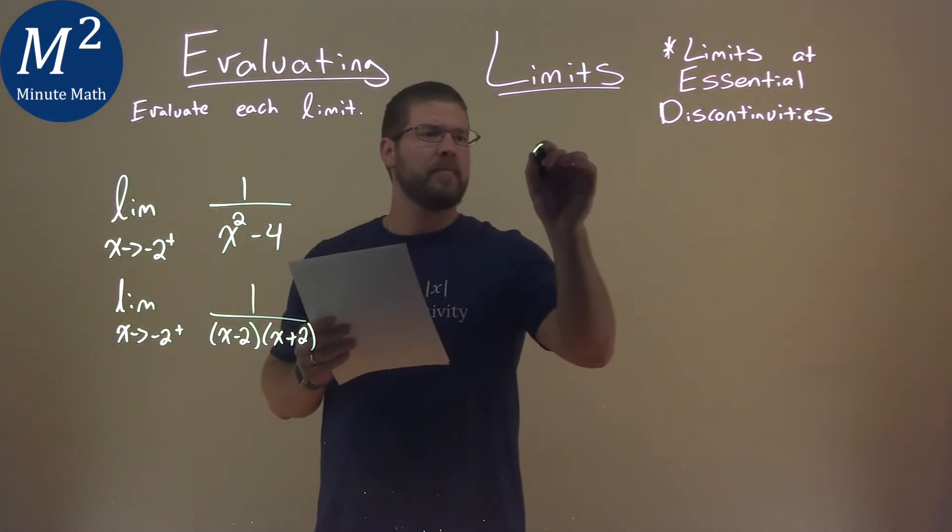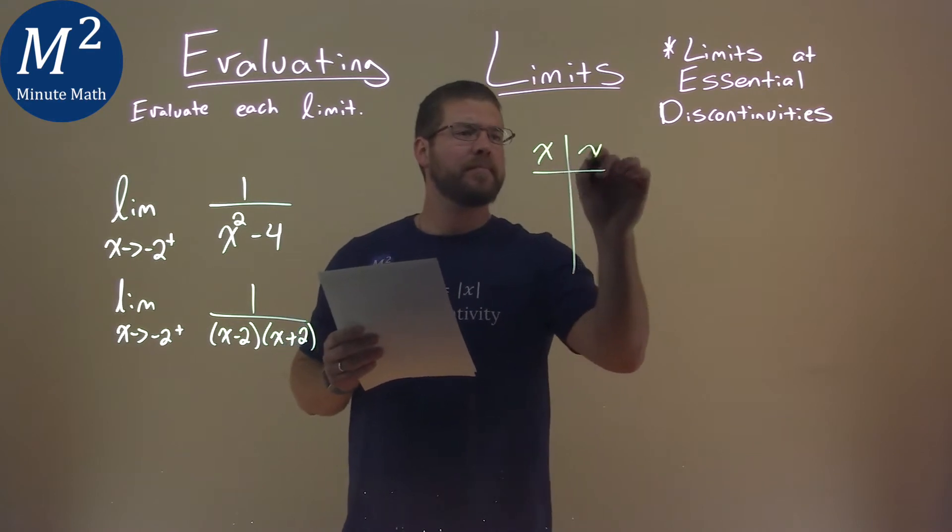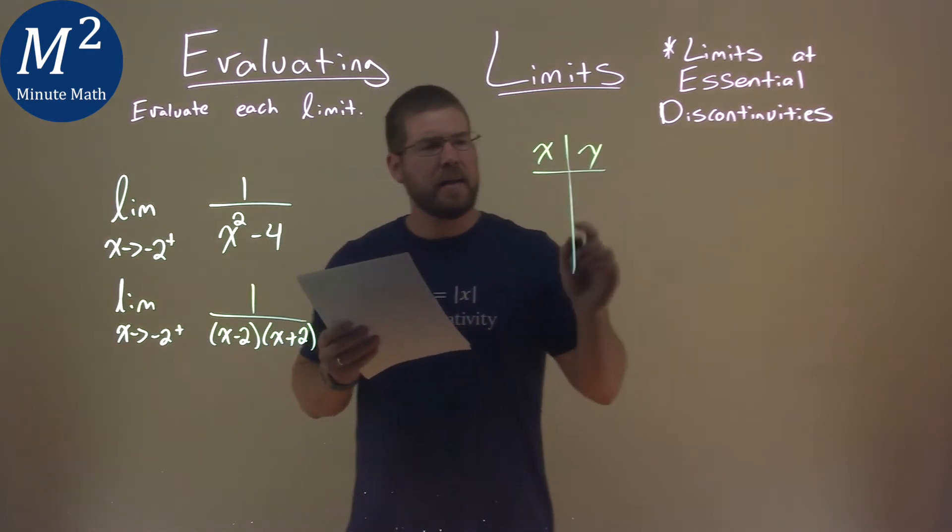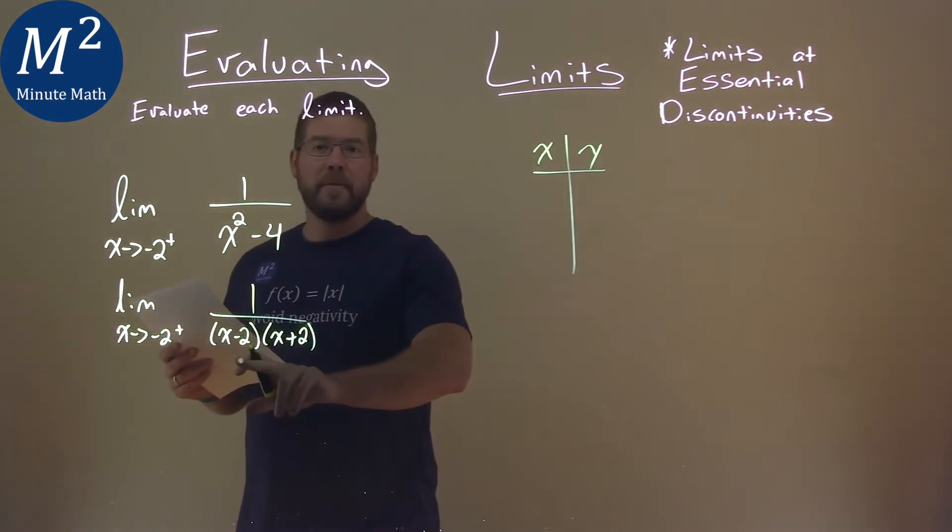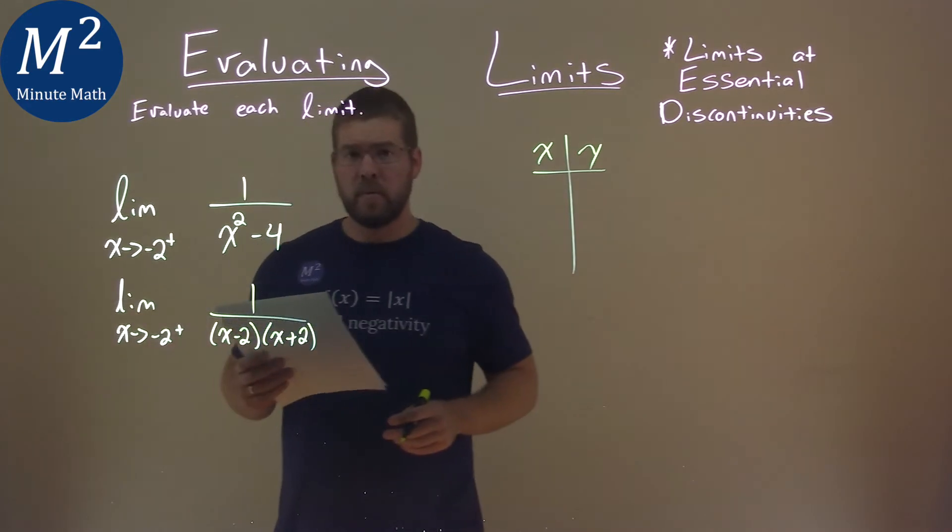Now, I'm going to make a little table here. We have x and y, and I'm going to put in some values to see what happens as we approach negative 2 from the right.